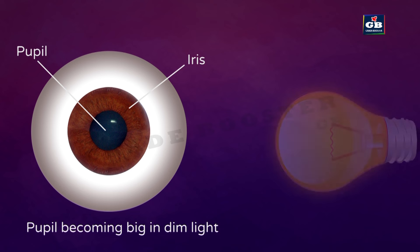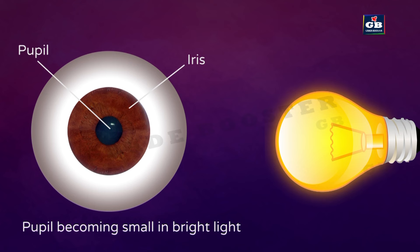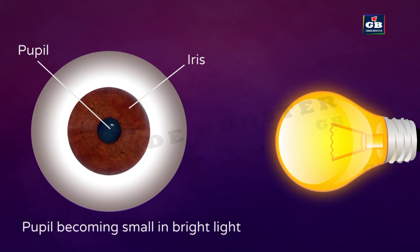When the light is very bright, if that bright light enters the eye, the inner parts like the retina can get damaged. So the pupil becomes very small and reduces the amount of light entering the eye. The size of the pupil is controlled by the contraction and relaxation of the iris muscles, and the iris adjusts the pupil size accordingly.